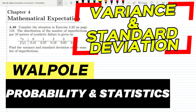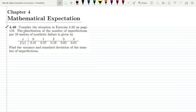Welcome back guys. I hope all of you will be fine. So this is question 4.49, and the statement of this question is: consider the situation in exercise 4.32 on page 119. The distribution of the number of imperfections per 10 meters of synthetic fiber is given by this table. We have to find the variance and standard deviation of the number of imperfections.